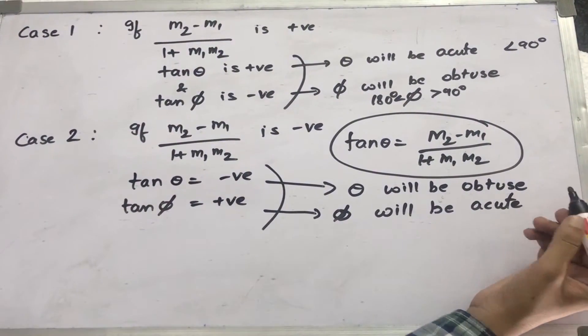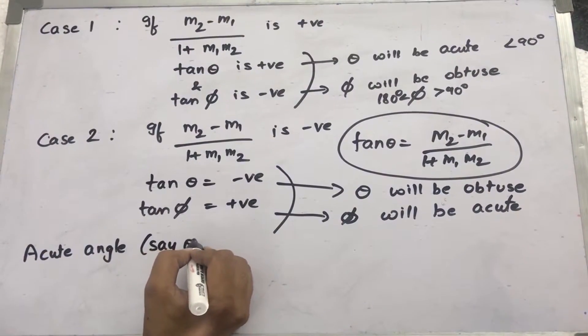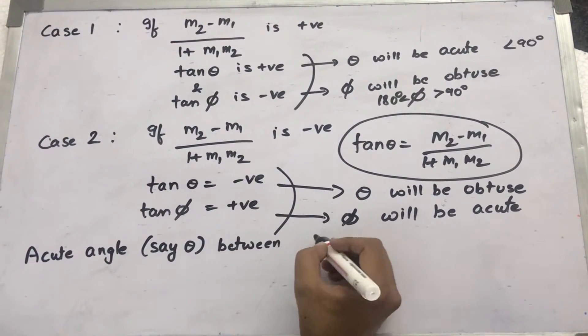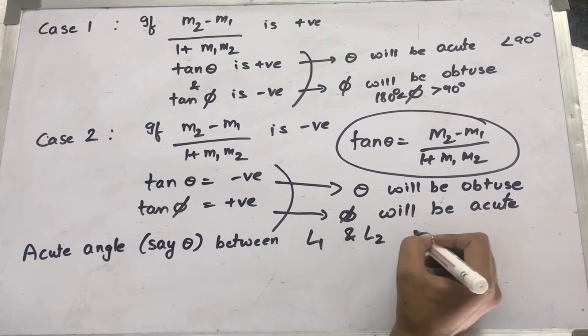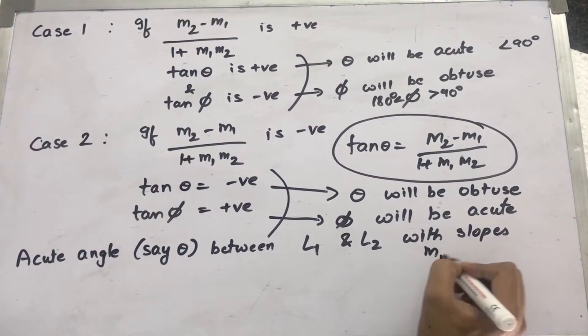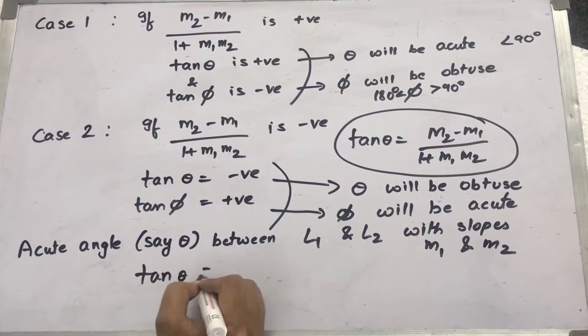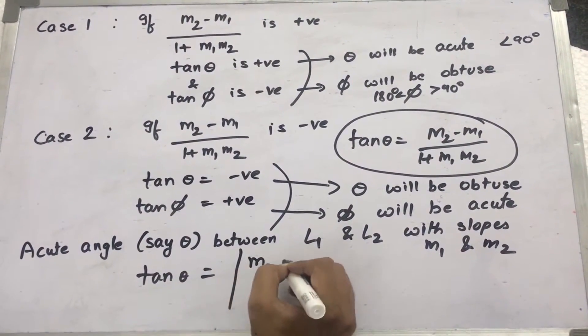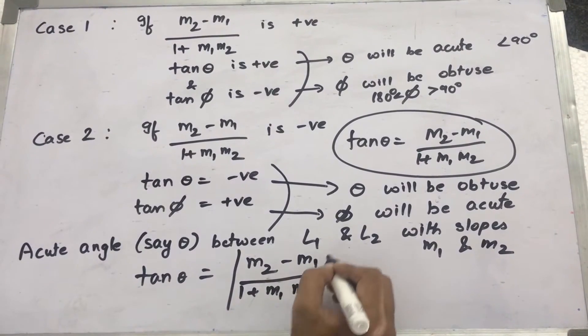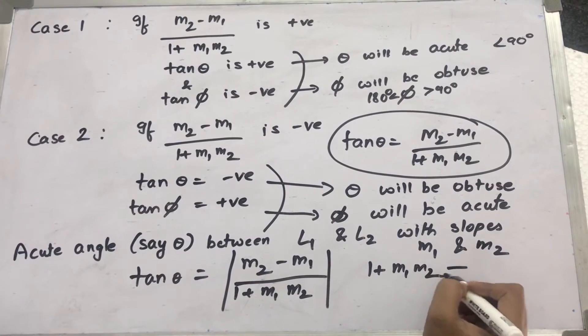So we should always remember that the acute angle, say theta, between two lines L1 and L2 with slopes m1 and m2 is given by tan theta equals the modulus of m2 minus m1 divided by 1 plus m1 m2, where 1 plus m1 m2 cannot be equal to 0.